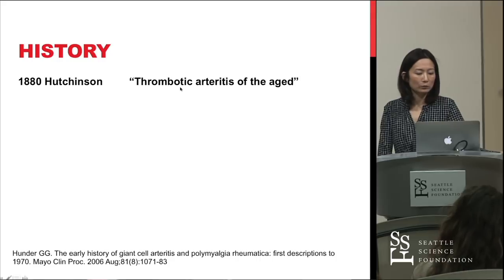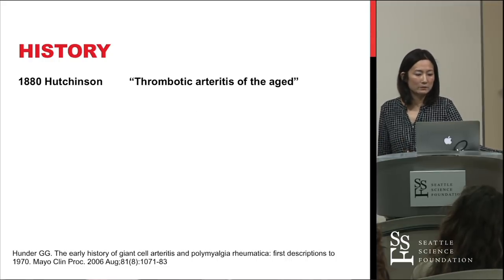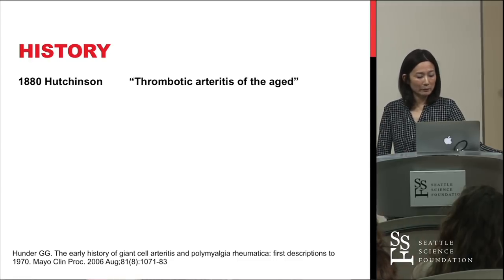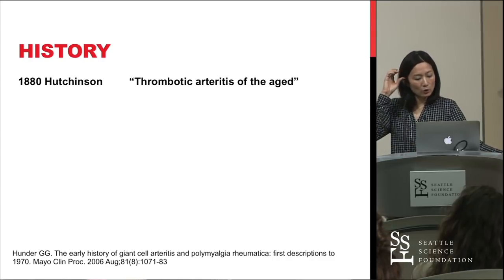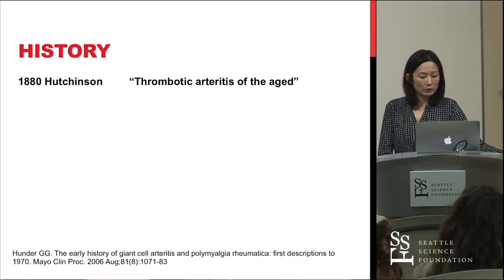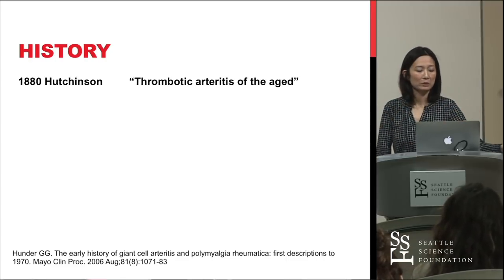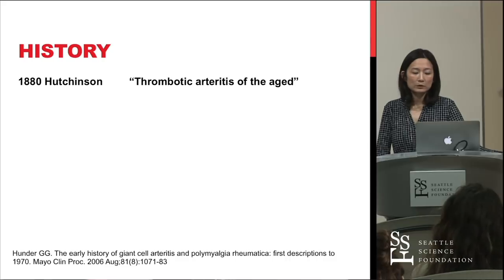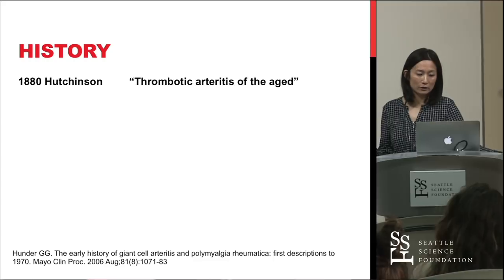The disease has only been clearly described in the literature for the last 100 to 150 years. The first physician to describe it was Hutchinson, who described an elderly man with red streaks on his scalp — cord-like and very painful. He was unable to wear a hat, and over time the streaks seemed to thrombose, harden, and lose their pulses. Hutchinson presumed this was arteriosclerosis and called it 'thrombotic arteritis of the aged.'